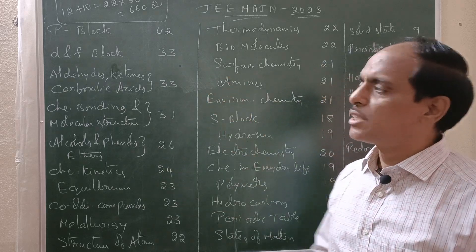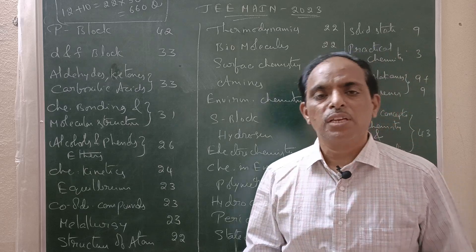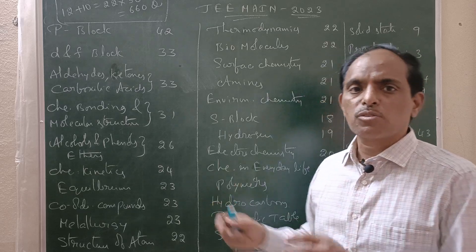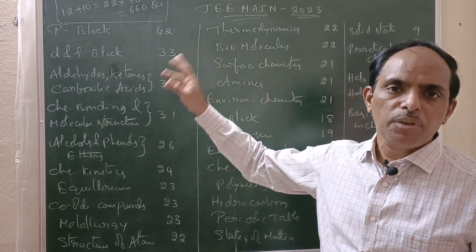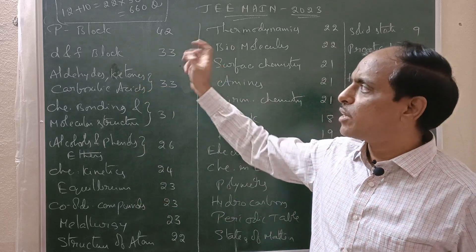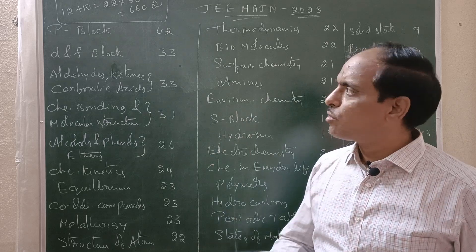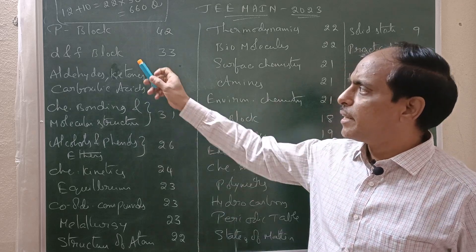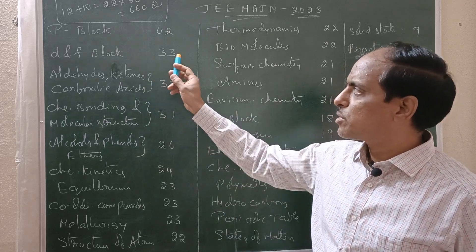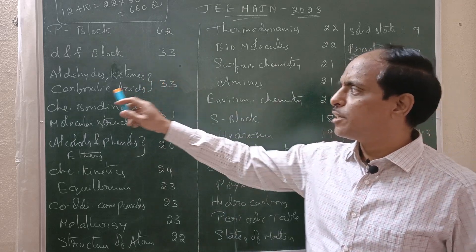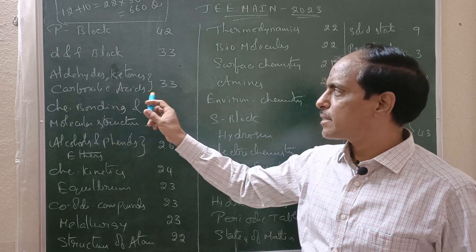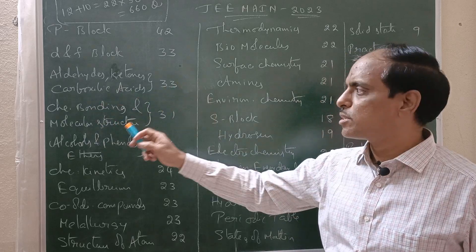For chemistry, this is the first question breakdown. P-Block elements: 42. D and F-Block elements: 33. Aldehydes, ketones, and carboxylic acid: 33.